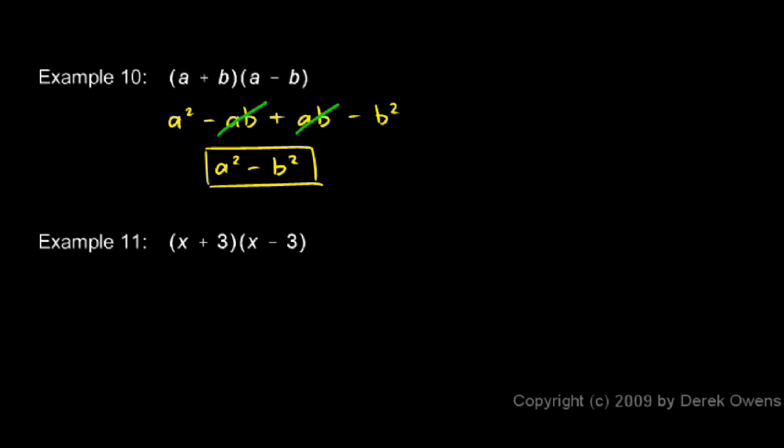And this you might remember from algebra in factoring. This is what we call the difference of two squares. a squared minus b squared always factors as a plus b times a minus b. Example 11 is very similar to that. This is an example of this particular case, difference of two squares. Watch what happens when we do a FOIL on x plus 3 times x minus 3.